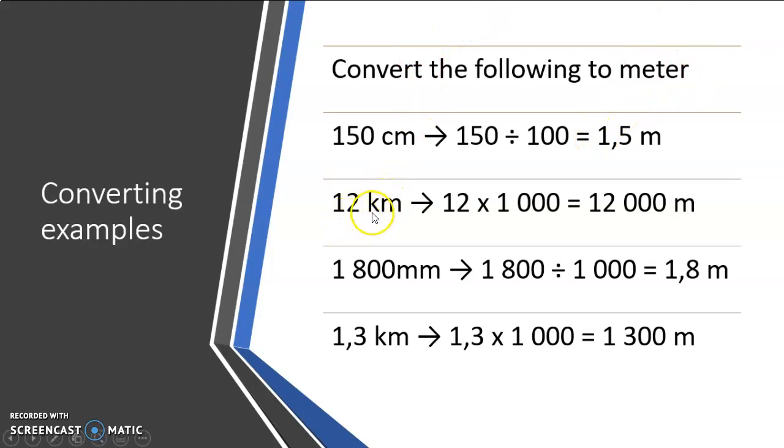If I have 12 kilometers and I want to go to meter, I'm going to a smaller measuring unit. So I'm multiplying. I'm multiplying with a thousand because I know there's a thousand meters in a kilometer. So I add three zeros to my 12 and that will give me 12,000 meters.